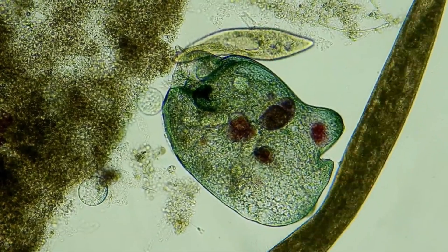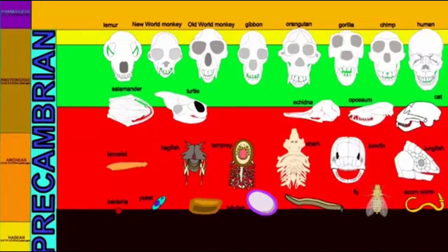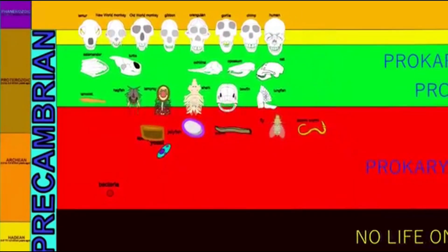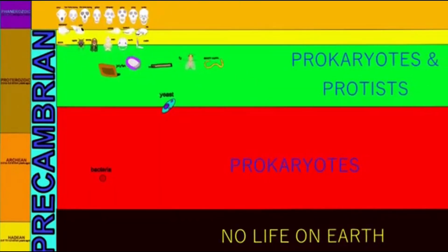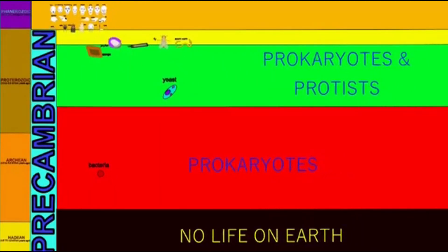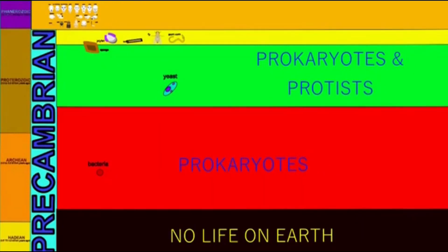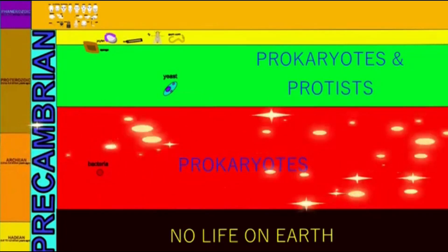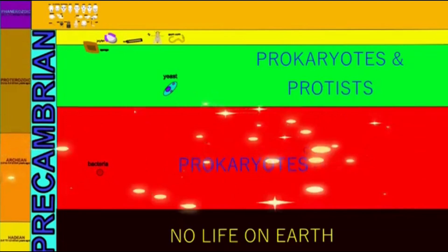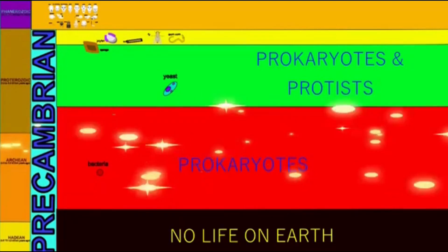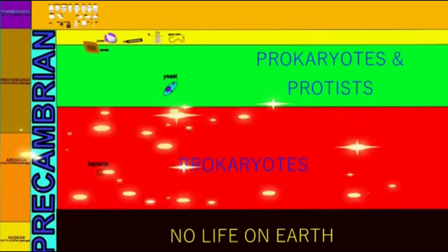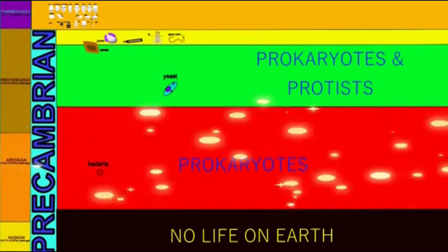However, about half the history of life existed without any eukaryotic cells, even the simpler eukaryotic organisms, the protists. So bacteria were the only living things on planet Earth from around 3.5 billion years ago to about 2 billion years ago or later.